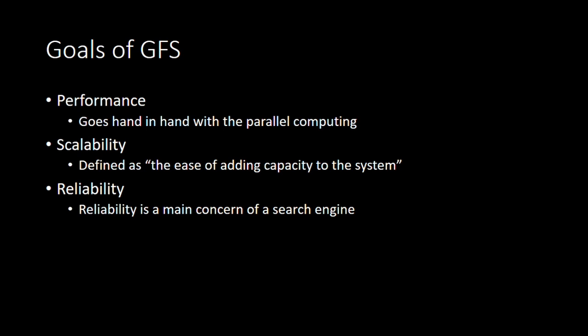Next is scalability. With a network as large as Google's, scalability is one of the main goals because the system shouldn't get worse as it gets bigger. It's defined as the ease of adding capacity to the system. And reliability, of course, is a main concern of any search engine and any file system in general. One of the ways the Google File System accomplishes this is through redundancy, which we'll get into shortly.